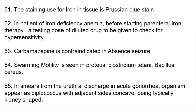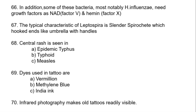In smears from urethral discharge in acute gonorrhea, the organism appears as diplococcus with adjacent sides concave, being typically kidney-shaped. H. influenzae needs growth factors: NAD, also known as factor V, and hemin, which is known as factor X.